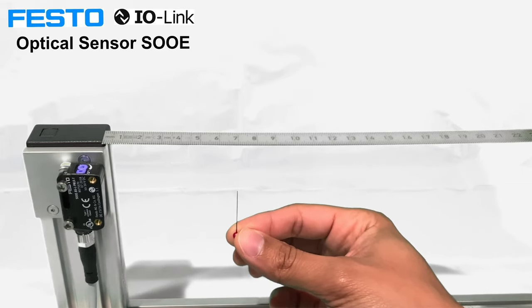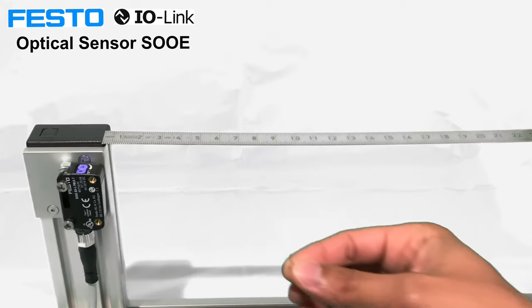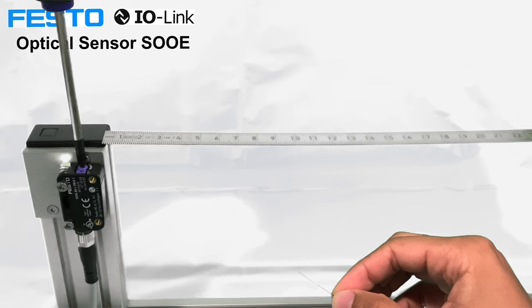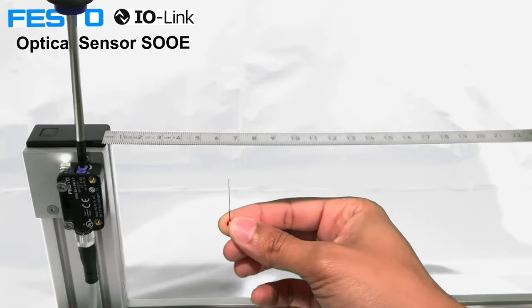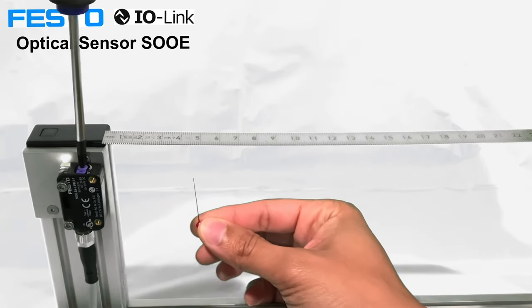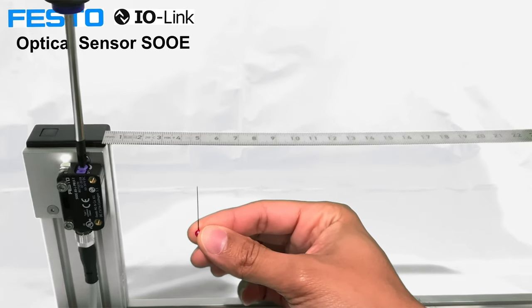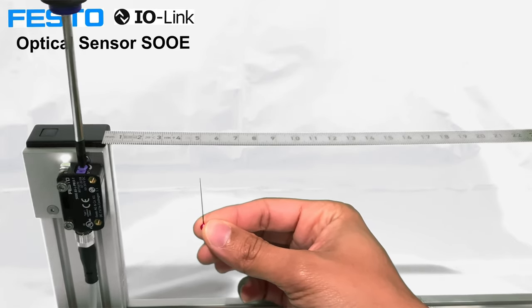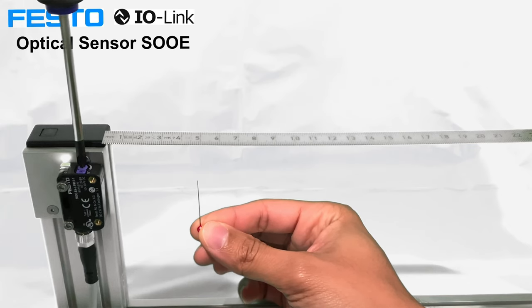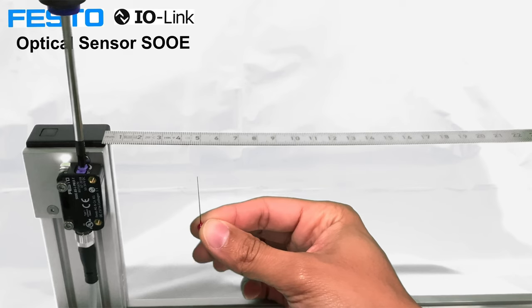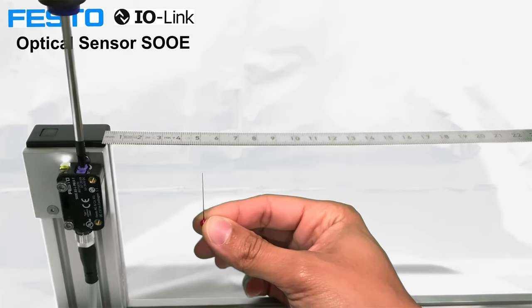Turning this clockwise increases the range. Right now it only detects at four centimeters. Adjusting it... now it sees at five centimeters with just a quarter turn. Now moving to six, you can see the light on the...